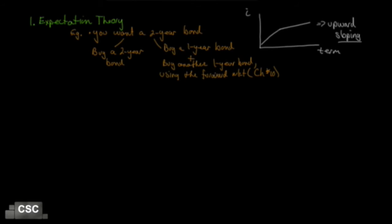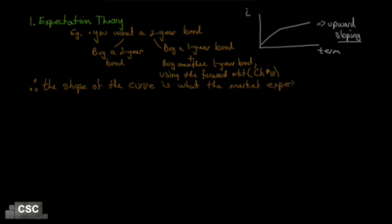For there to be no arbitrage opportunities, the return on the two-year bond must be the same as doing this combination — otherwise you would choose one over the other until prices adjusted. So the shape of the yield curve reflects what the market expects interest rates to be one year out, then the year after that, and so on. You could replicate a five-year bond by rolling one-year bonds with forward agreements, and all those returns must equal the five-year bond return. That's what's meant when we say forward rates are implied by the yield curve.